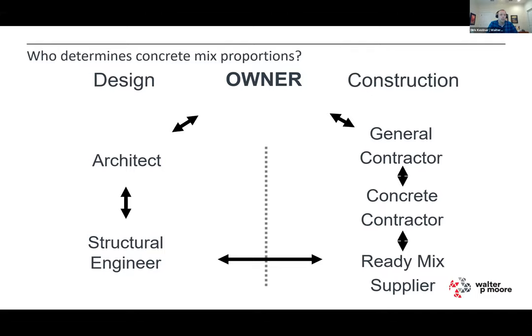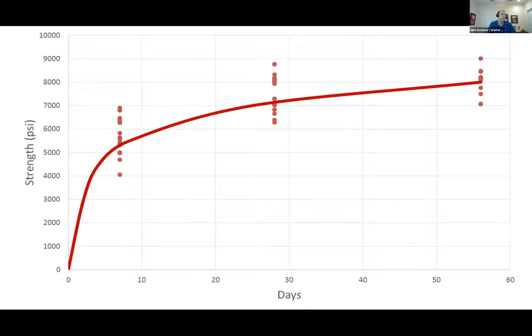Those arrows going back and forth across this invisible wall can get really cumbersome. The better way is when the owner breaks down this wall and we can be collaborative — having discussions to understand who really needs what out of the concrete and when, and if any of the requirements we think we need are conflicting. Concrete is a living material. It gains strength over time. This is the classic strength development curve with scatter and then the mean strength.